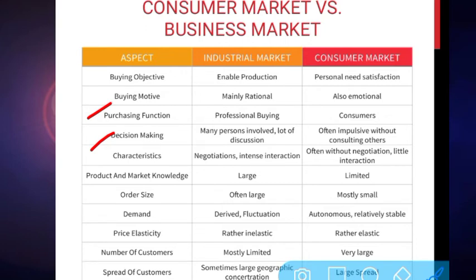The next aspect is characteristics. Industrial buying is characterized by intense interaction and many rounds of negotiation — on payment terms and other terms and conditions. While in the consumer market, rounds of interaction are fewer; customers generally go to the market having already decided what to purchase, completing their buying with little interaction. In industrial buying, many people are involved from beginning to end and continue interacting even after the purchase is made.